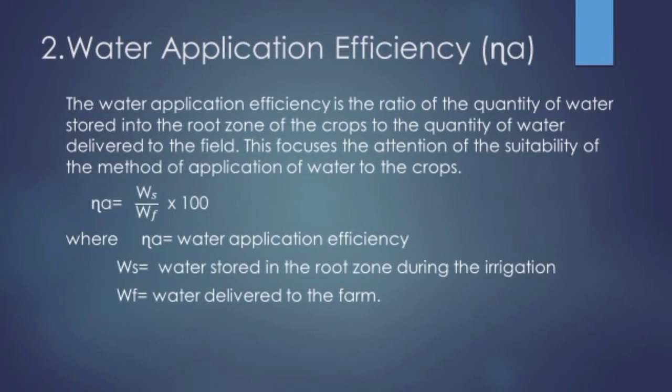The next efficiency is water application efficiency. After water reaches the farm, how much of it gets stored in the root zone? Application efficiency is the ratio of the quantity of water stored in the root zone of the crops to the quantity of water delivered to the field.